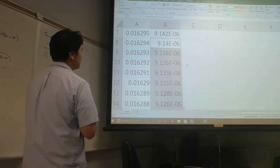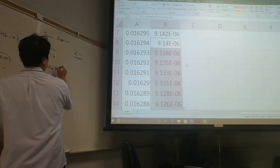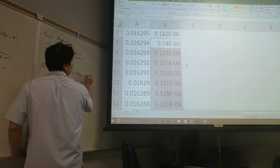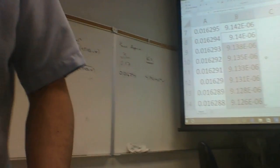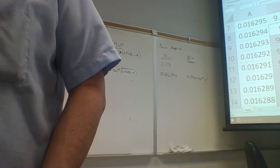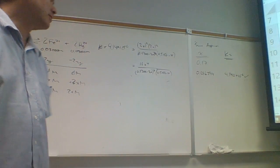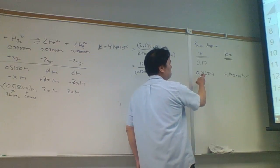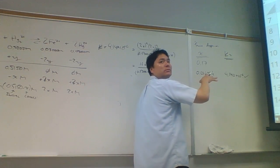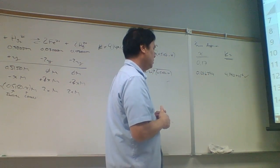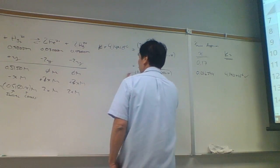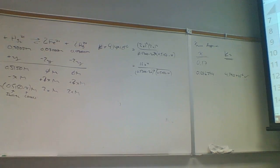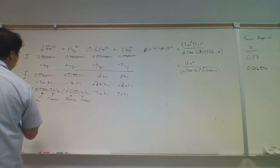Unfortunately, you can't use Excel on the exam, so we're stuck. That gives 9.140 × 10⁻⁶ — this looks good. How does that compare with the x value from the simplifying assumption? The simplifying assumption gave x = 0.0169; successive approximations gives x = 0.0163. It's kind of close, but not exact. Even though the simplifying assumption failed, it was still useful — it still was somewhat close. Now we're going to use this x value to calculate the equilibrium concentrations.